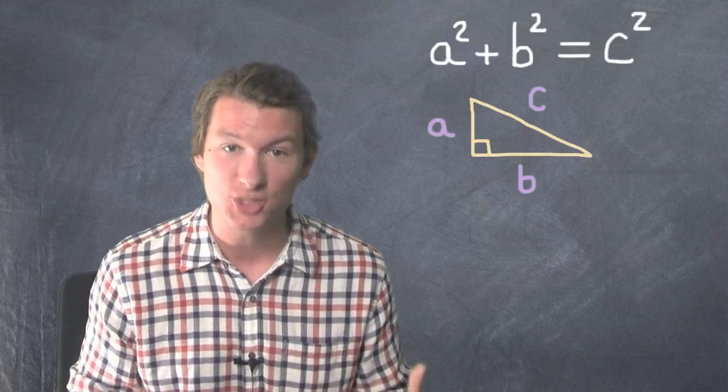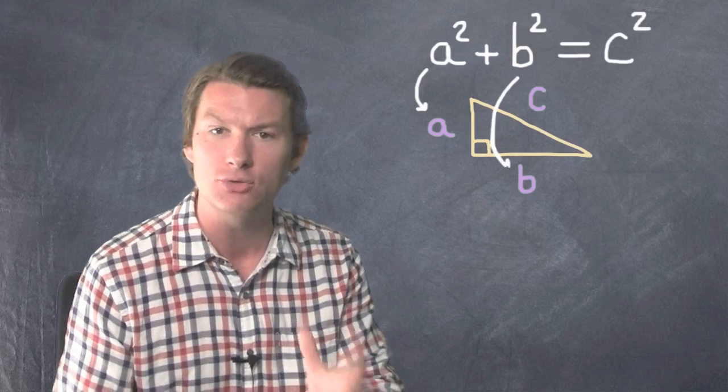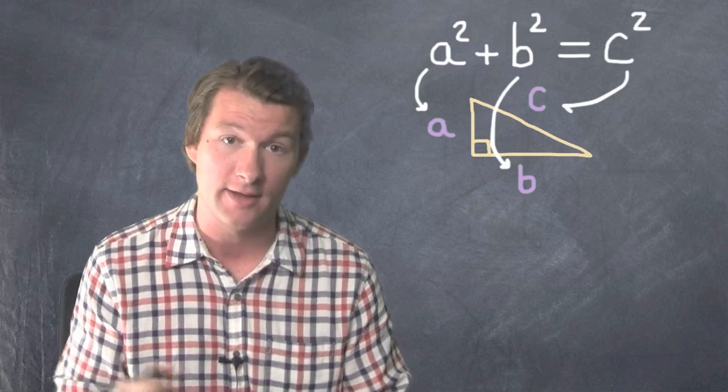Remember, Pythagorean Theorem is a squared plus b squared equals c squared. A and b are the two legs and c is the long side, the hypotenuse.